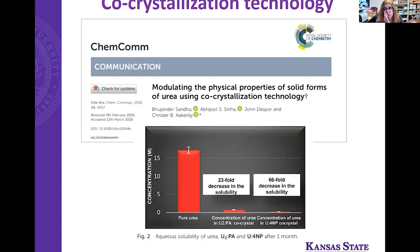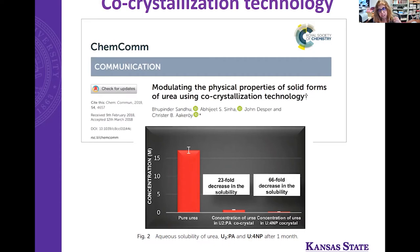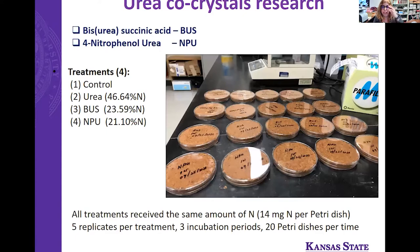Dr. Christak Roy in our chemistry department and his students worked on modulating the physical properties of solid forms of urea using co-crystallization. They co-crystallized urea with pimelic acid and with four-nitrophenol. Co-crystallization with pimelic acid decreased solubility 23-fold, while four-nitrophenol decreased it 66-fold — a much greater effect. Currently, our lab and his lab are collaborating to see how these co-crystals behave in soil.